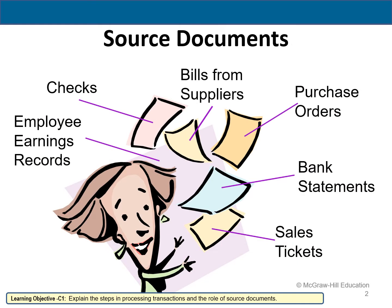Source documents are where you might look to determine whether a transaction has occurred and get the information needed to record it. Some examples include purchase orders, checks written — which could be for anything like the power bill or property taxes — and bills from suppliers. Later in the semester we'll do bank reconciliations and get deep into bank statements. These are just some examples of source documents.